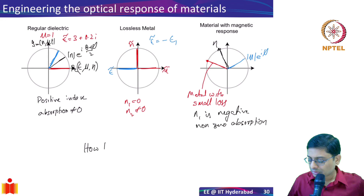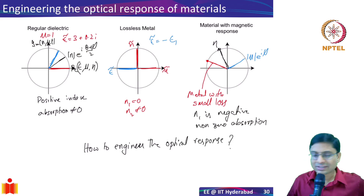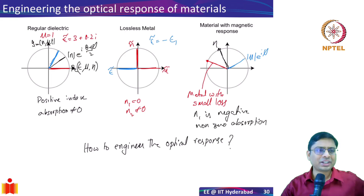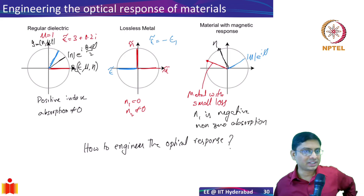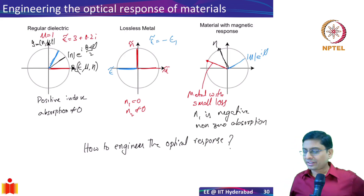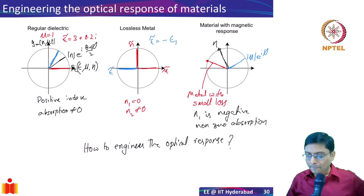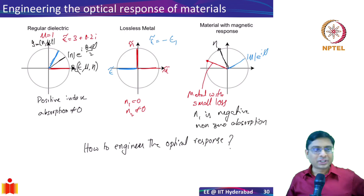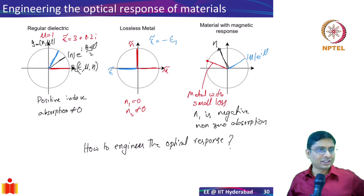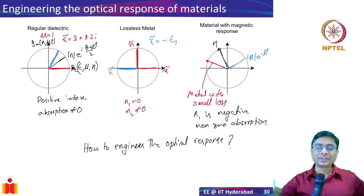Later in the course, we will talk about how to engineer the optical response. So far it's just an oscillator — we gave an example of the Lorentz oscillator as it occurs in nature. But it turns out you can actually make this happen even if it is not naturally present — you can engineer an electric response or a magnetic response. We'll talk about that a couple of weeks from now. I want to leave you with this idea: optical response is fundamental to understanding nanophotonics. You have the naturally occurring responses, which we understand using various models, and you also have metamaterials with engineered response.